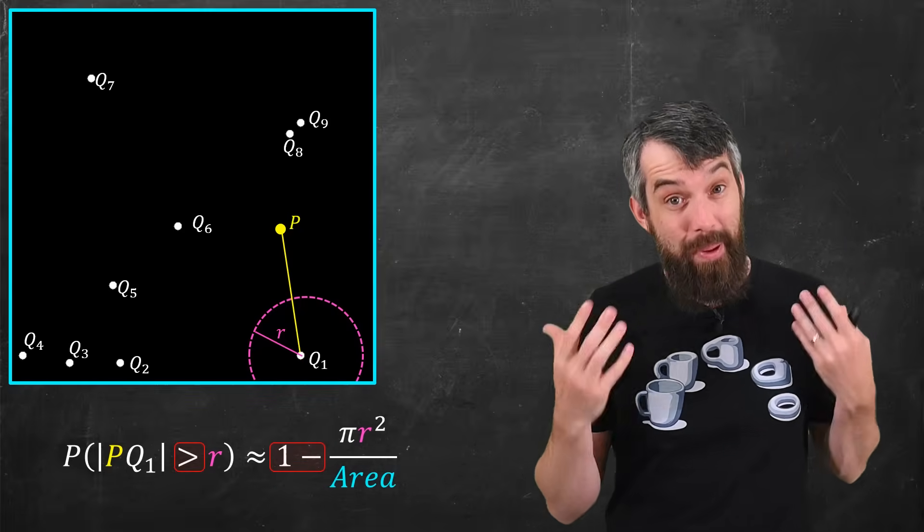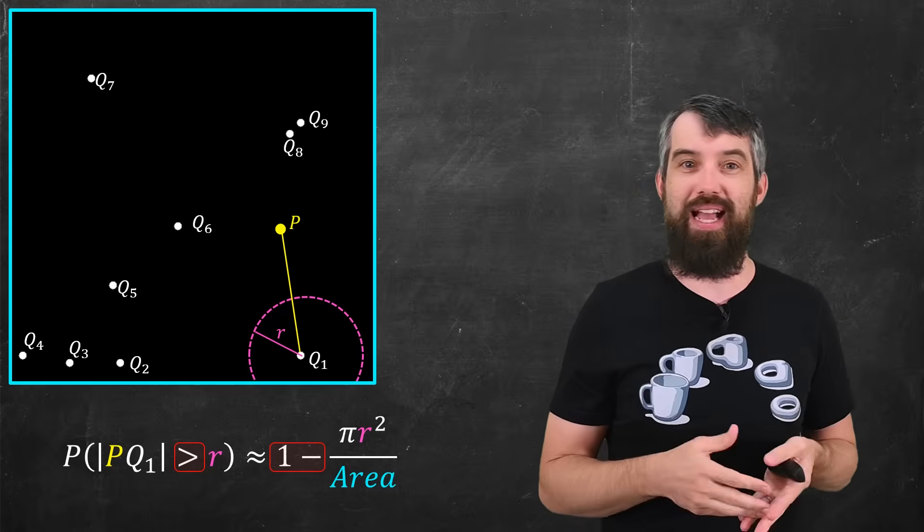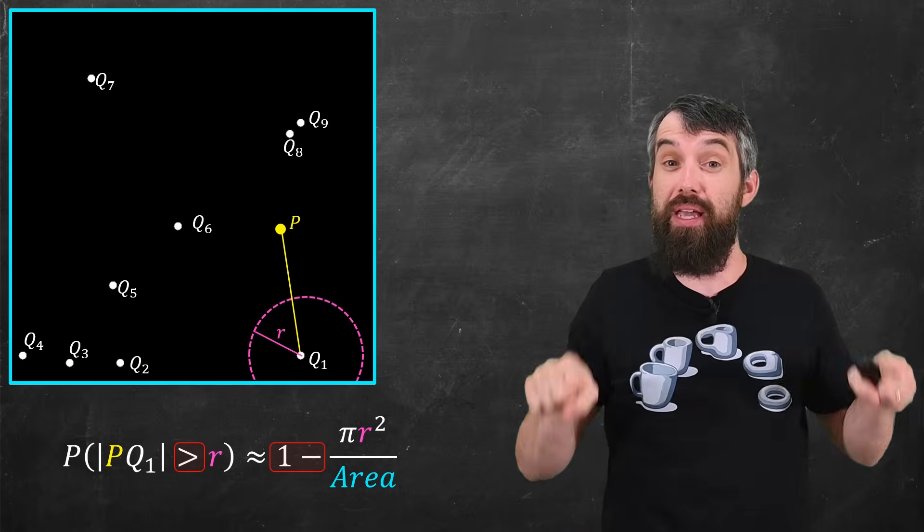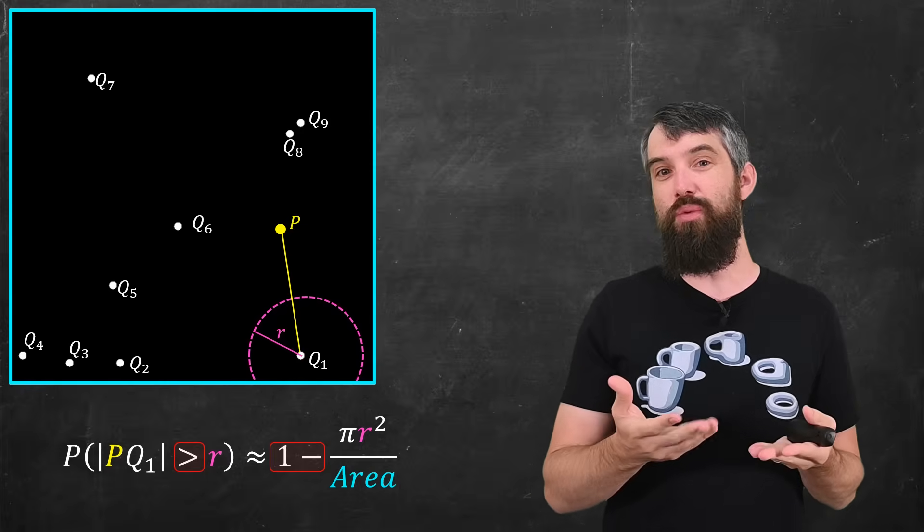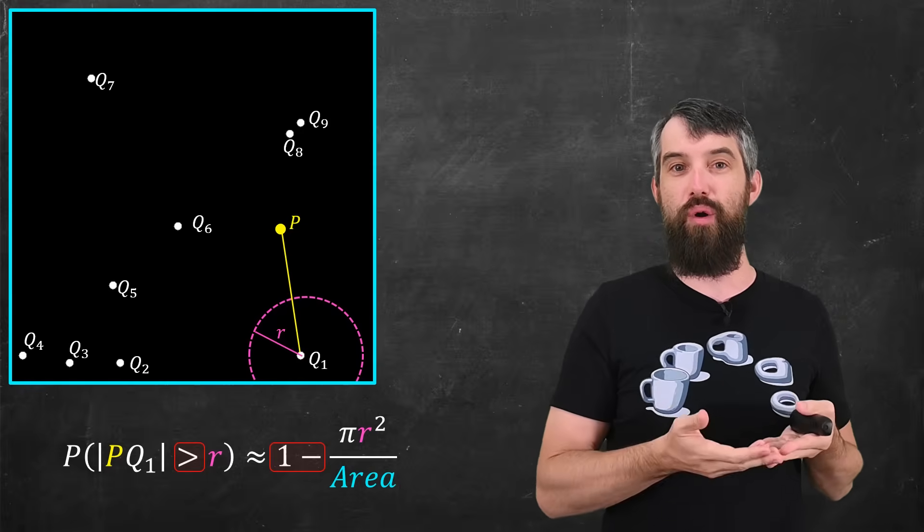So 1 minus pi R squared divided by the area of the big region. So this was the probability that my random point P was at least a distance of R away from the Q1.